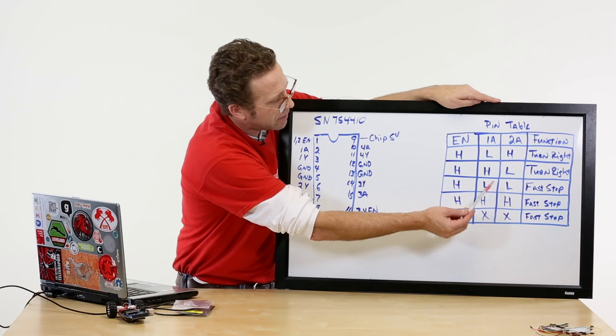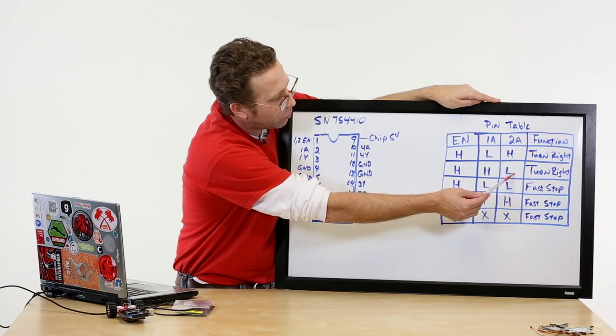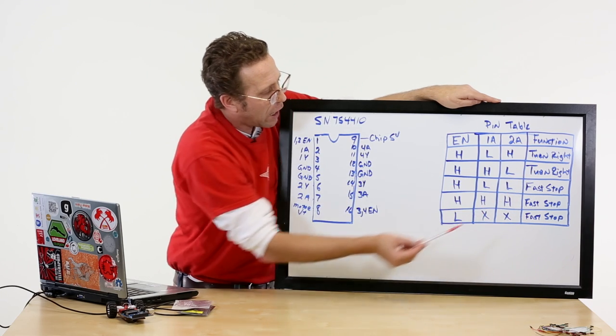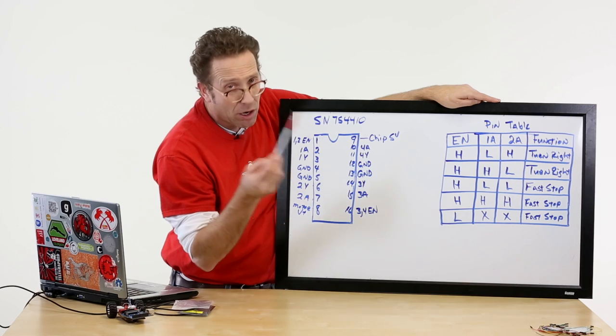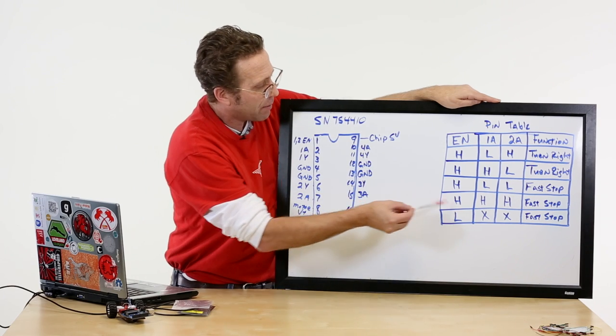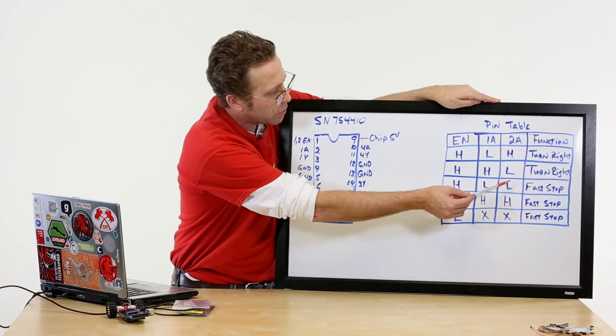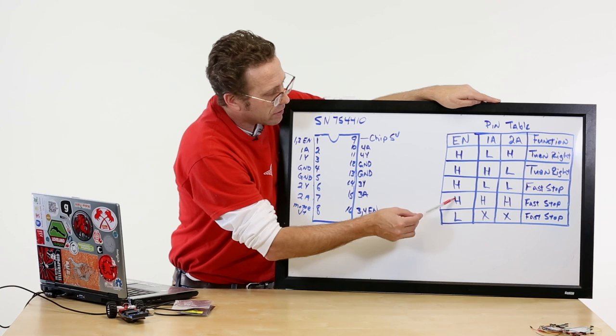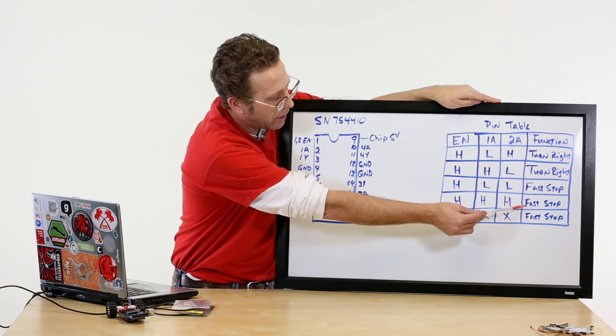If I switch these states and 1A is high and 2A is low, the motor turns the opposite way. Any other option on this table - if this is high and the pins are both low, it stops. If this is high and the pins are both high, it stops.